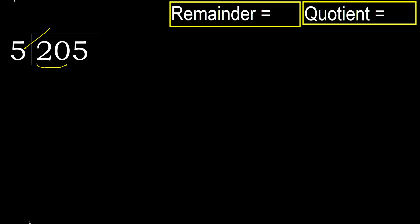5 multiplied by which number is nearest to 20, but not greater? 5 multiplied by 5 is 25 — that is greater. Multiplied by 4: 20 is not greater. 20 minus 20 equals 0.